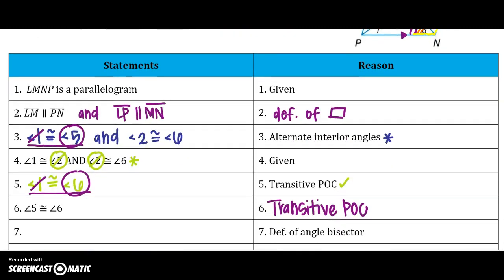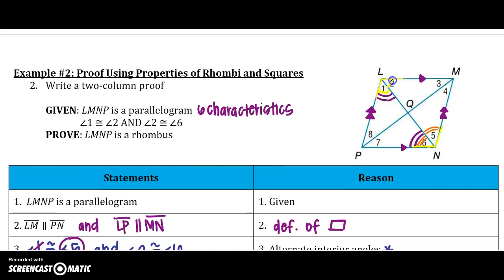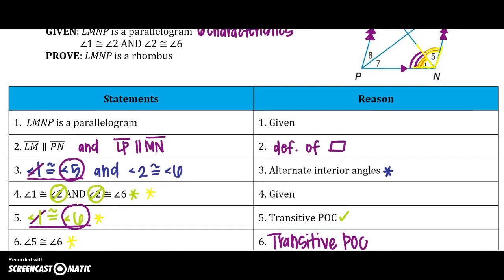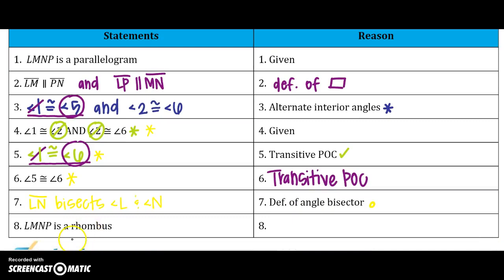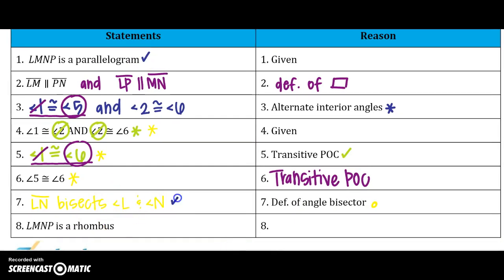Let's keep going. Because I have this information combined with the given, I know that LN bisects angle L and angle N because of the definition of an angle bisector. Noticing that this angle is congruent to that one — that is a bisector. Angles 5 and 6 are congruent — that is a bisector. So a parallelogram whose diagonals bisect the opposite angles is a rhombus, by theorem 6.18.